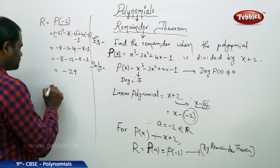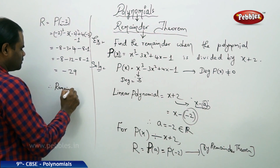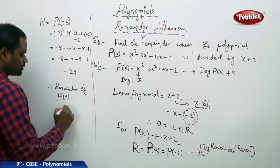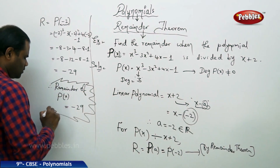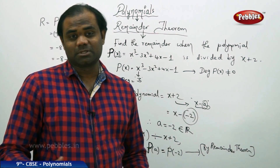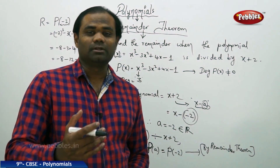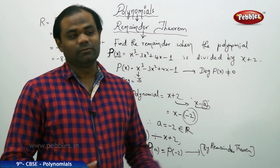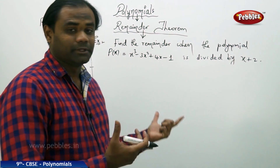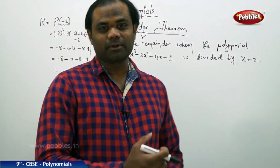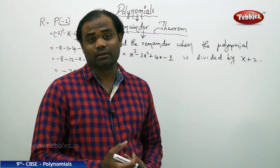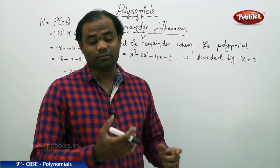This comes out to be negative 29. Therefore, the remainder for the given polynomial p(x) is minus 29, obtained using the remainder theorem. Remainder theorem helps in finding the remainder when a polynomial is divided by a linear polynomial. Now let's see how we can verify the remainder theorem using the long division method, since this property states the remainder is directly f(a) or p(a) for x minus a being the divisor polynomial.